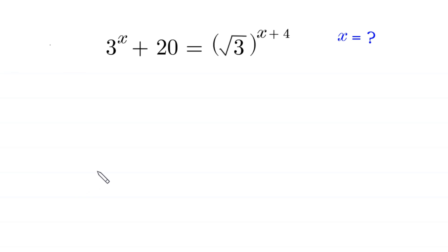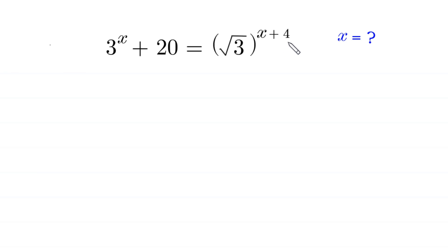Hello, welcome to how to solve this very nice exponential equation: 3 to the power x plus 20 is equal to the square root of 3 to the power x plus 4. We need to find all possible values of x.